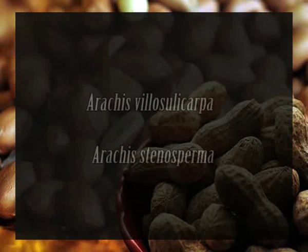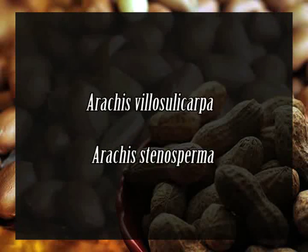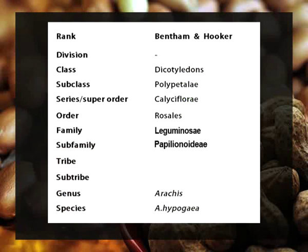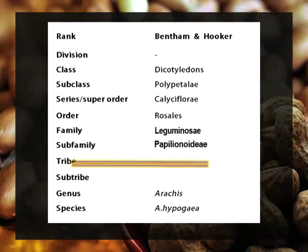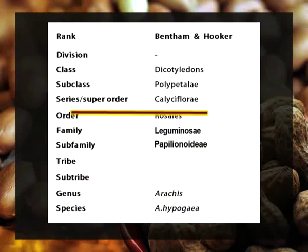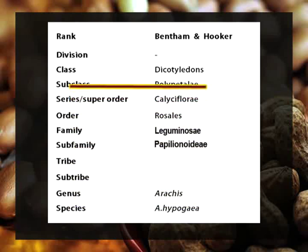Out of these 69 species, Arachis hypogaea is by far the most economically important. However, some other species like Arachis villosulicarpa and Arachis stenosperma are also cultivated for their seeds. Under Bentham and Hooker's classification, Arachis hypogaea is placed in genus Arachis, order Rosales, series Calcifloreae, subclass Polypetalae, and class Dicotyledons.